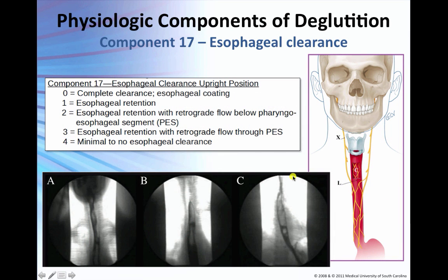Esophageal clearance in the upright position always brings controversy. Clinicians report that radiologists don't want them to turn the patient around, citing liability issues if something is missed. You have to stress that you are looking AP for two reasons: not only for esophageal clearance, but also for component 13, pharyngeal contraction. As a speech-language pathologist, you're assessing clearance of contrast through the esophagus in the upright position — the position most patients eat and drink in — and studies show relationships between incomplete esophageal clearance and oropharyngeal impairment.